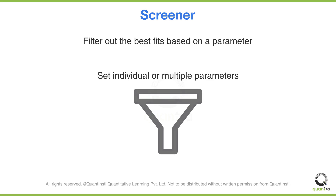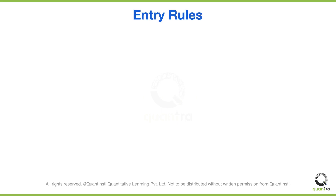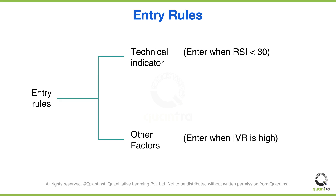Now that you've shortlisted your options, you have to define the trading rules. You should have a strategy in mind, and based on that strategy you define the entry rules, which could depend on a technical indicator. For example, you can set a rule to enter a position when the RSI comes below 30. It could also depend on other factors, such as when the implied volatility rank (IVR) of the option is high, or a combination of multiple factors.